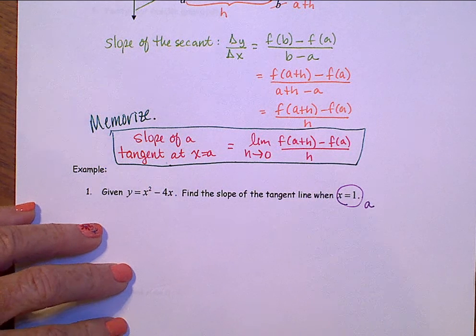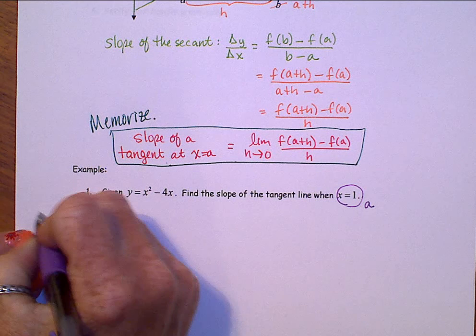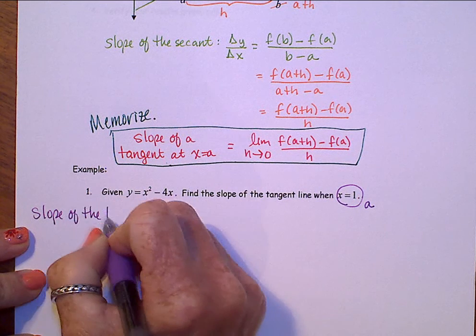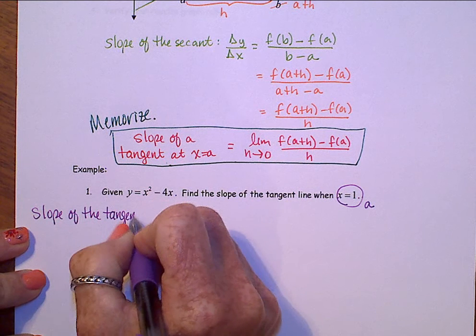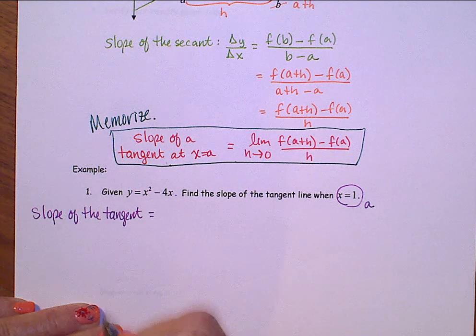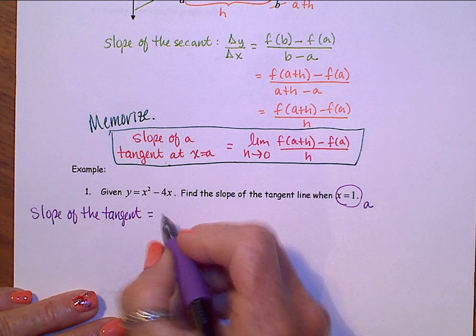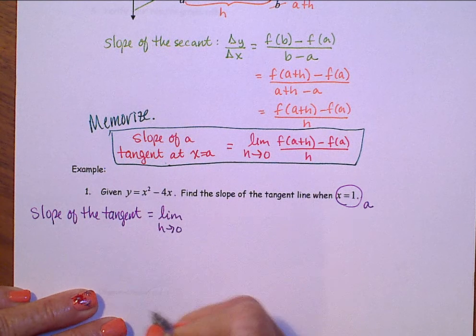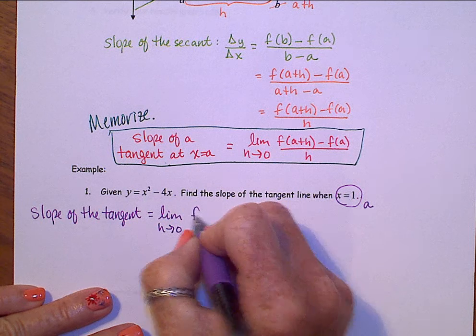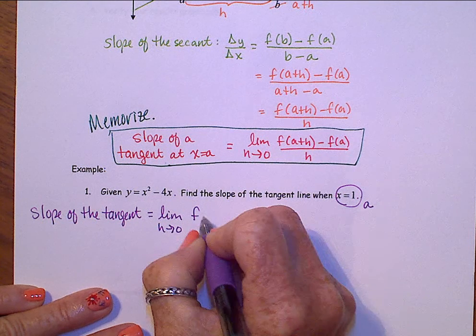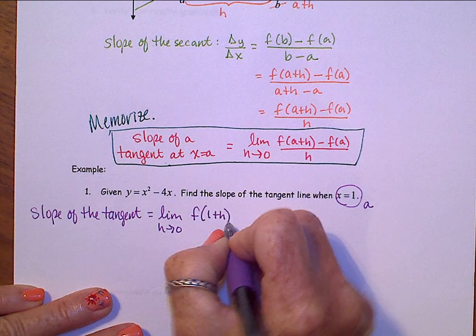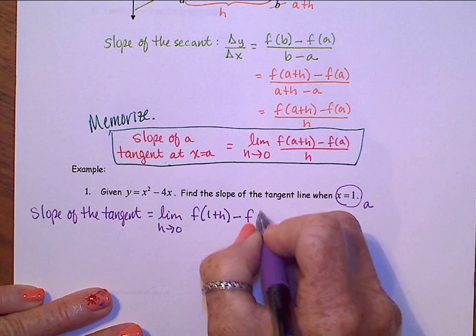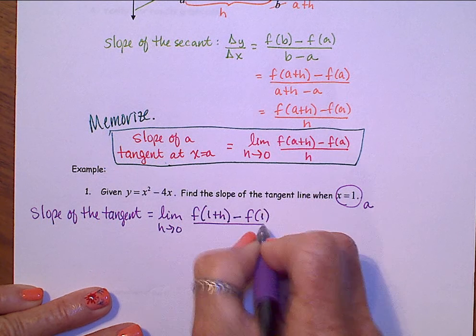That's where you're trying to find the slope of the tangent. Slope of the tangent. Let's just substitute into this expression right up here. This is the limit as h approaches 0, f of a plus h. So 1 plus h minus f of a, which is 1, all over h.